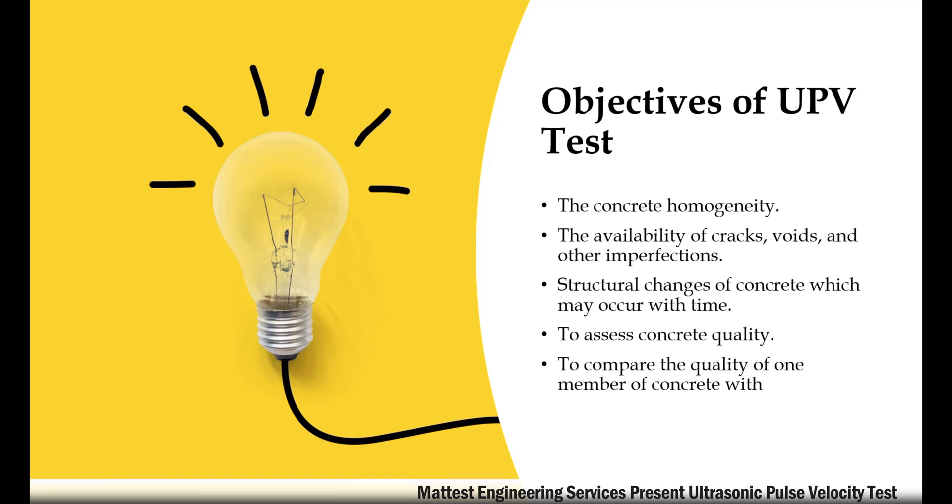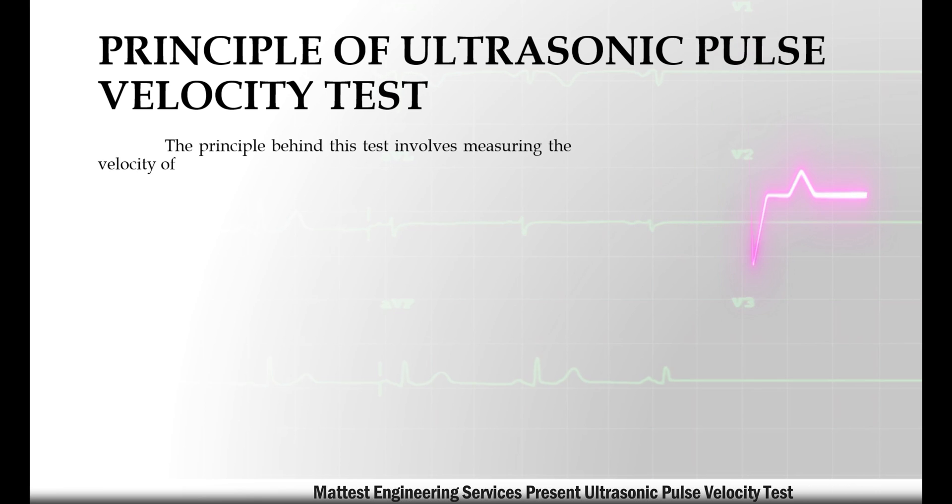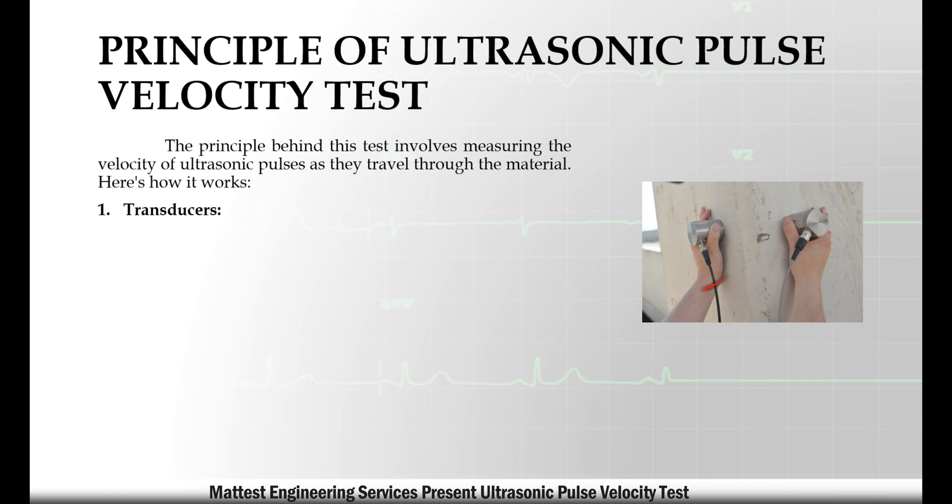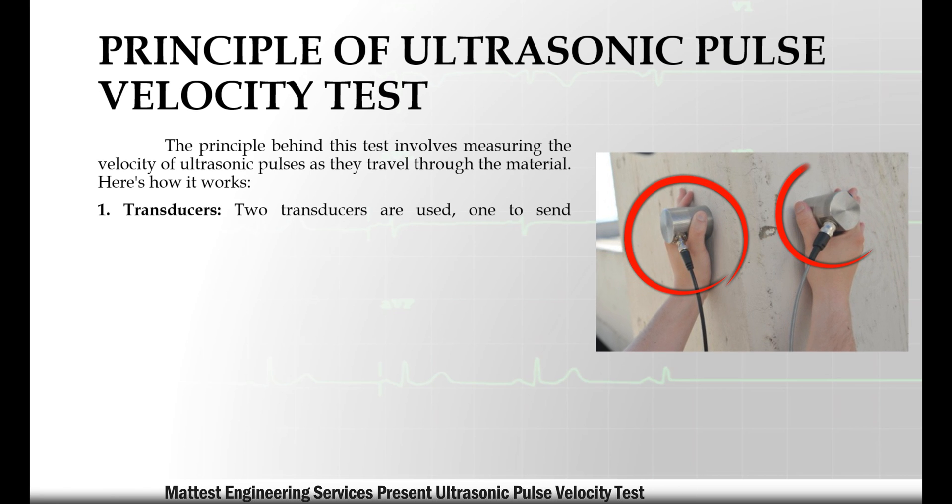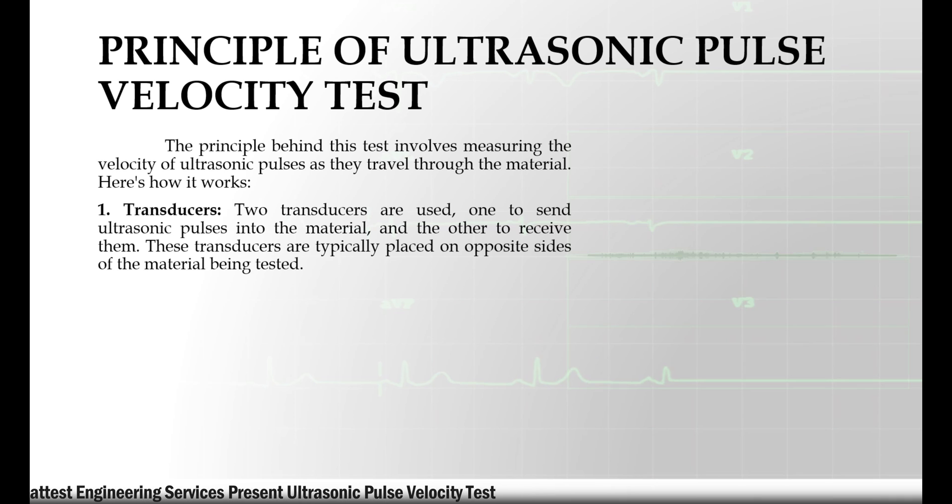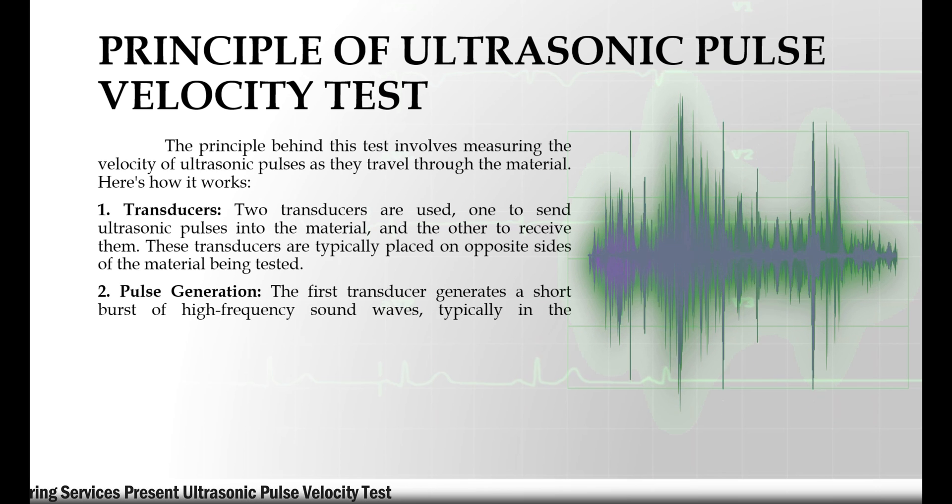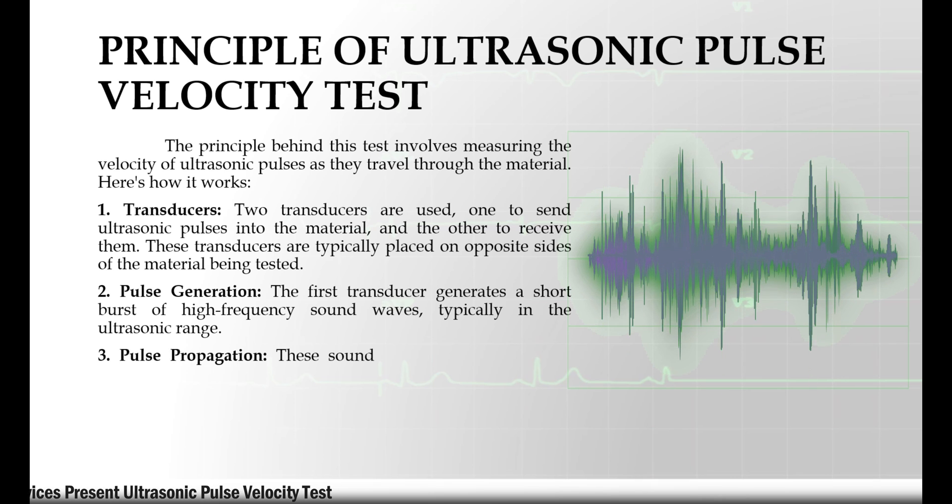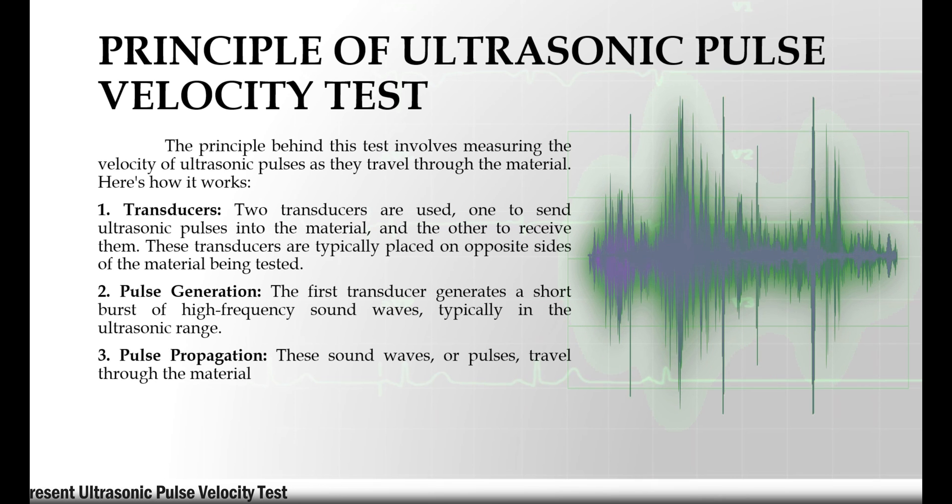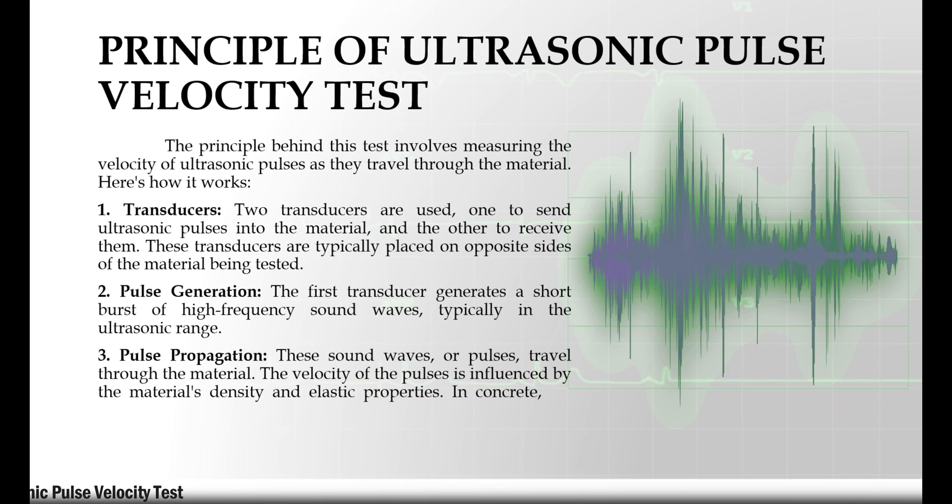Principle of ultrasonic pulse velocity test: the principle involves measuring the velocity of ultrasonic pulses as they travel through the material. First, two transducers are used—one to send ultrasonic pulses into the material and the other to receive them, typically placed on opposite sides of the material. Second, pulse generation: the first transducer generates a short burst of high-frequency sound waves in the ultrasonic range. Third, pulse propagation: these sound waves travel through the material. The velocity of the pulses is influenced by the material's density and elastic properties. In concrete, pulses travel faster through sound, well-compacted areas and slower through voids, cracks, or areas with lower quality.